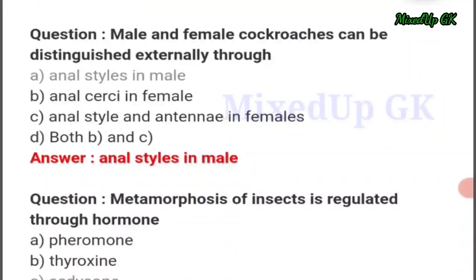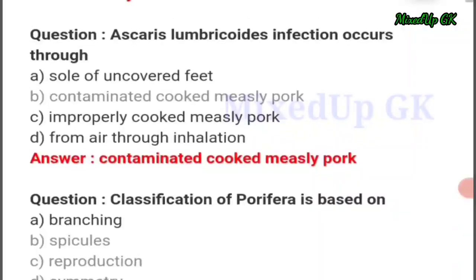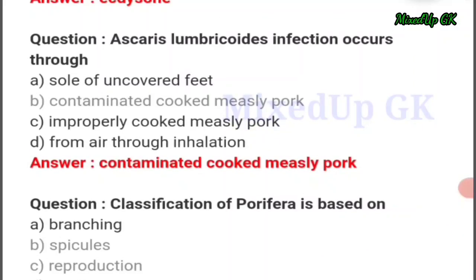Next question: male and female cockroaches can be distinguished externally through — the answer should be option number A: anal styles in male. Ascaris lumbricoides infection occurs through — the answer should be option number B: contaminated cooked pork.